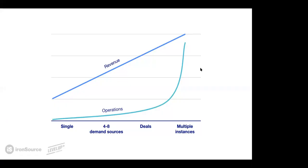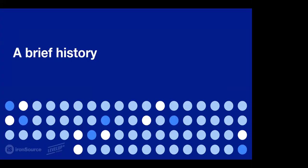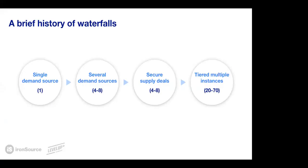So, a brief history. Back in the early days, developers started using a single demand source — a single SDK embedded into their application — to generate revenue. Then, in order to optimize and get higher fill as well as more competition, they started adding additional SDK sources into the project, around four to eight being the most common number. That was also the time of the rise of the mediation platform, which helped optimize the setup. To manage several demand sources, more monetization managers were required and the team started to grow.